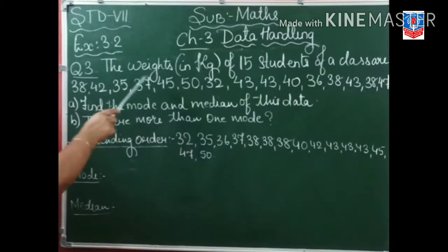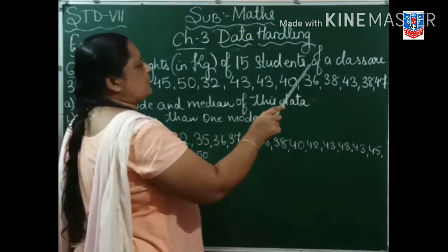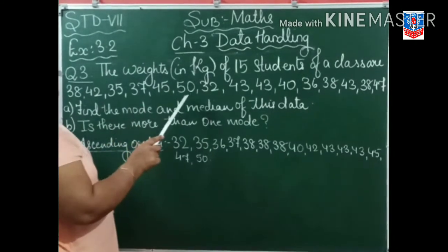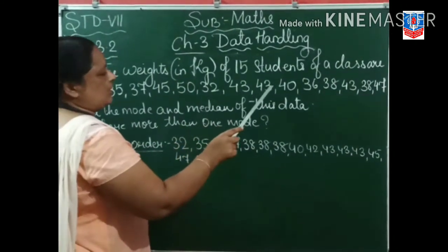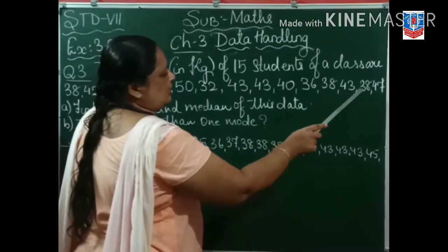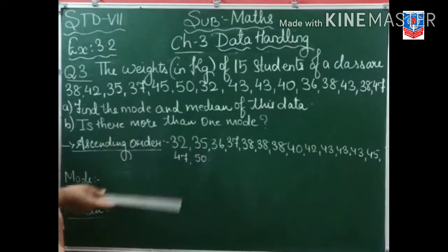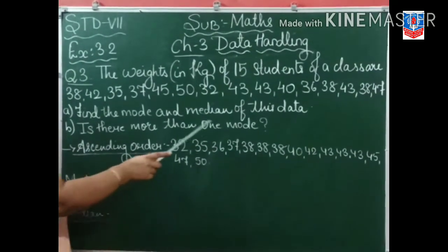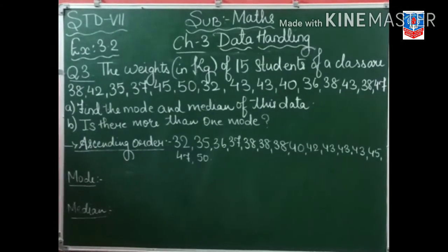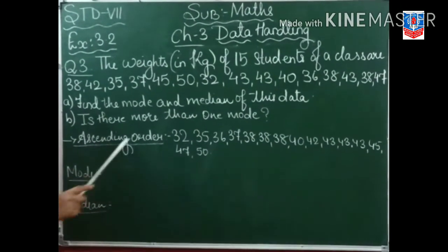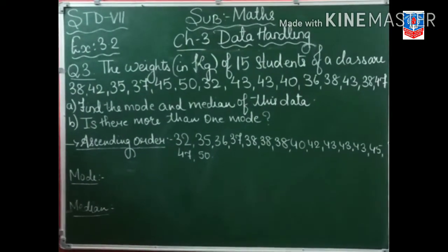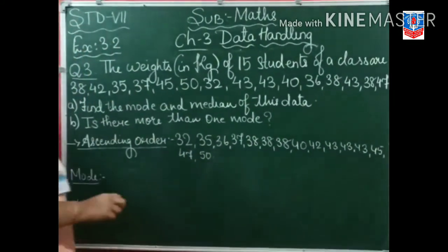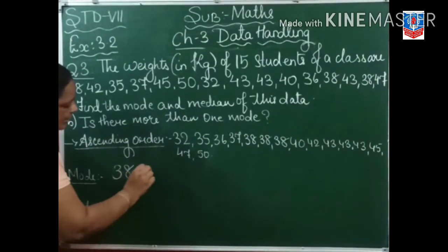Question number 3. The weight in kg of 15 students of a class are: 38, 42, 35, 37, 45, 50, 32, 43, 43, 40, 36, 38, 43, 38, 47. You have to find the mode and median of this data. First, arrange the data in ascending order. Mode is the number which appears most times. See — 38 and 43 both appear most frequently. So the mode is 38 and 43.